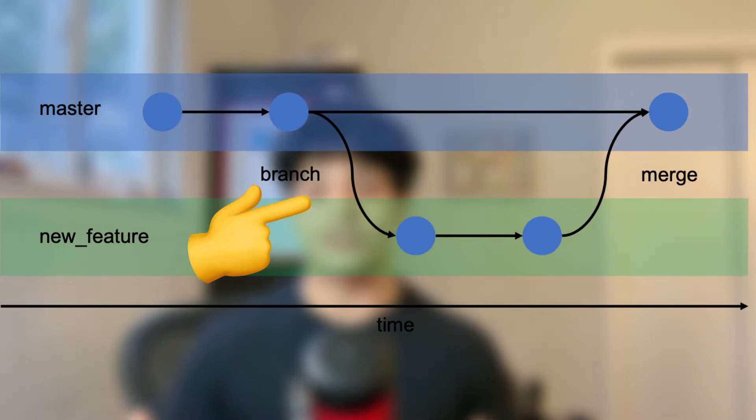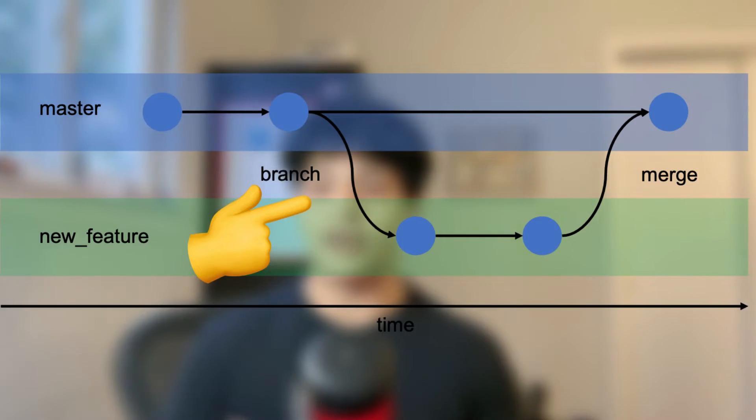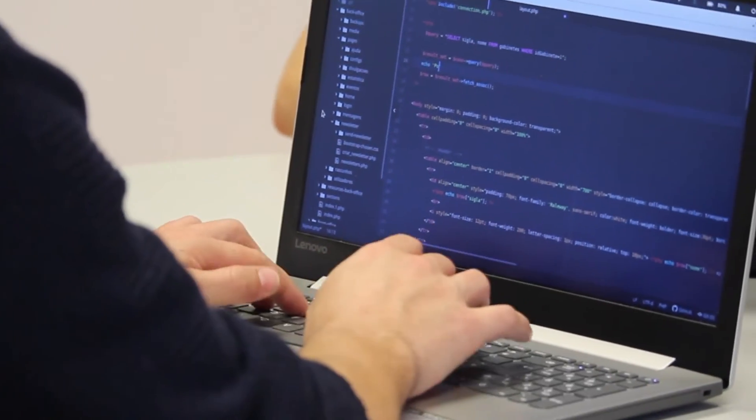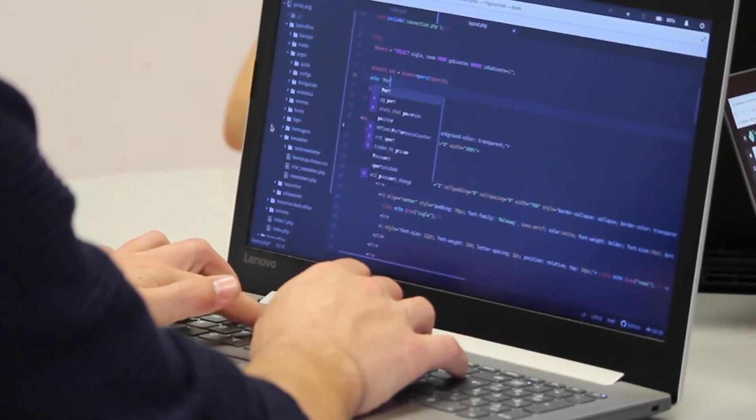Branches allow you to create isolated copies of your main codebase. This lets you experiment, so you can add a new feature without messing up your existing working code. Imagine creating a new feature on your app — you want to create a new branch for this. That way, if your code introduces a bug, your whole project won't be affected. Instead, you can simply delete this branch and try again and make it actually work.